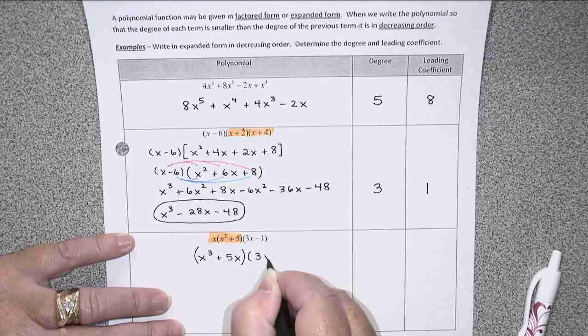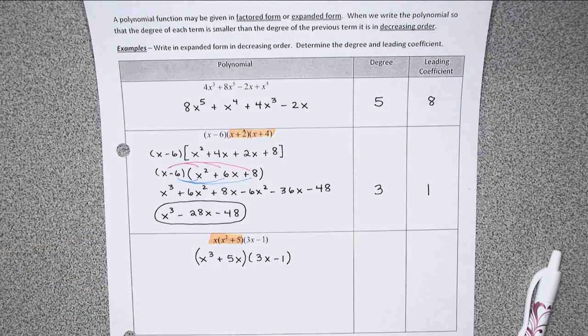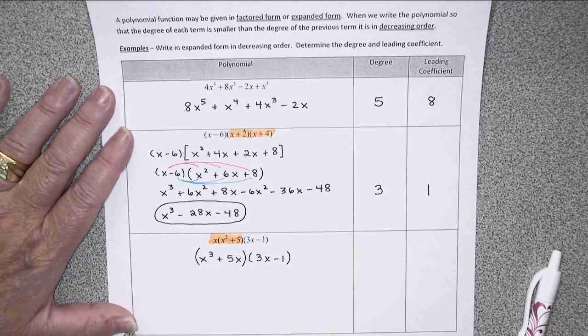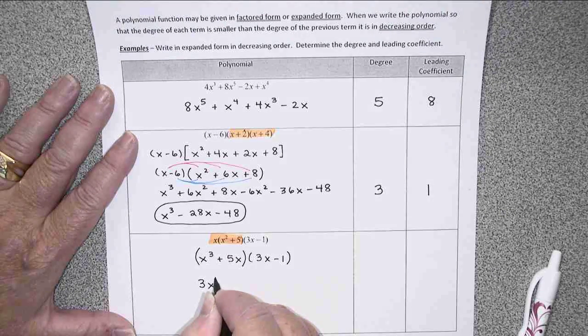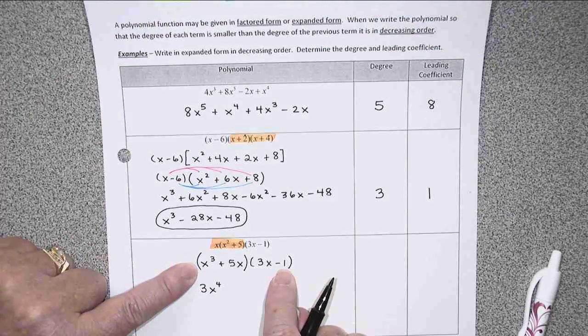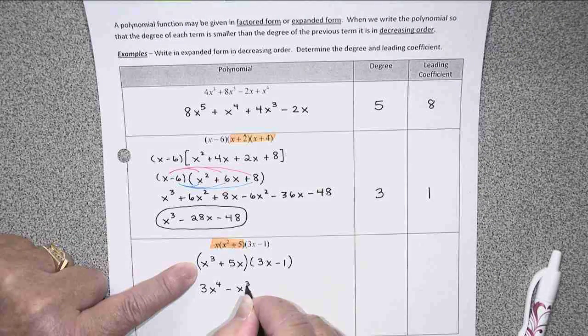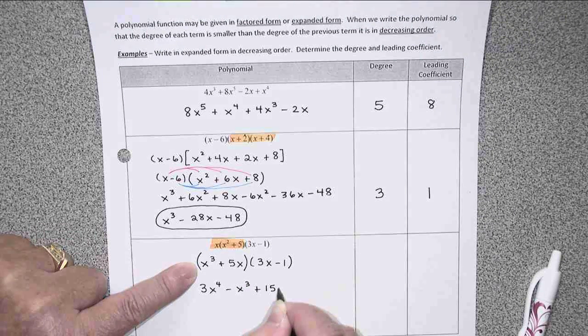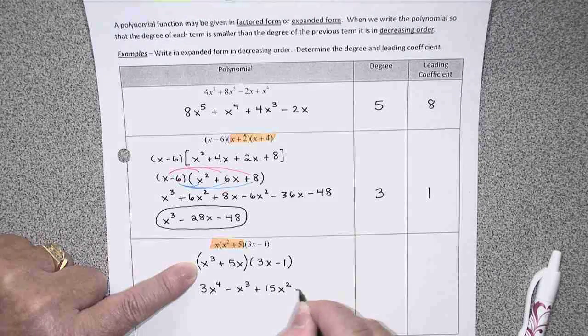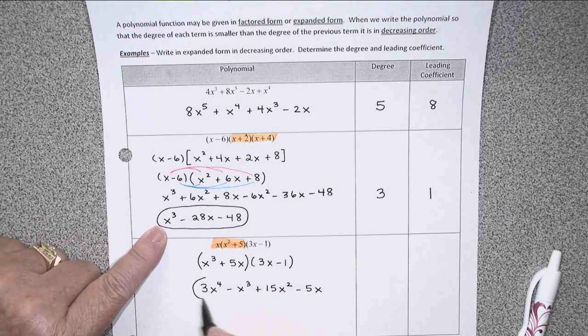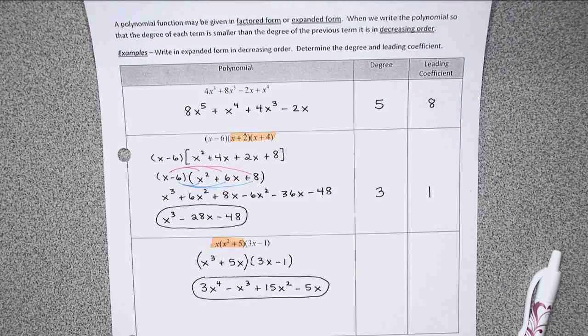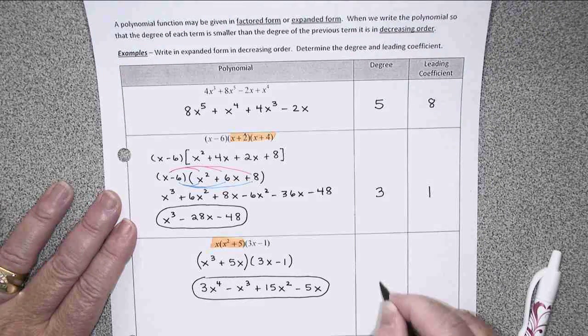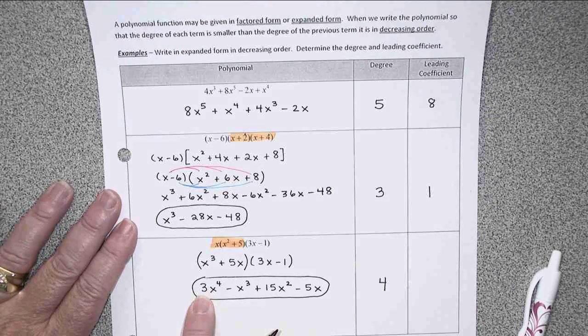Now, I haven't yet multiplied by the 3x minus 1, so it's still there. And then I can just finish this problem with my FOIL process or binomial multiplication, whatever method you use. We'll get 3x to the fourth. Outers would give me a negative 1x cubed. Inners give a positive 15x squared. And the last is a negative 5x. That's already in decreasing order, and nothing can be combined since there are no like terms. The degree is 4, and the leading coefficient is 3.